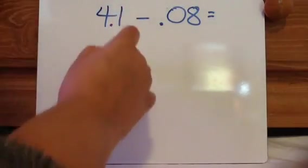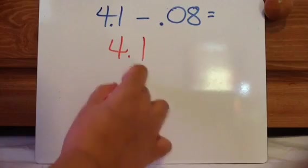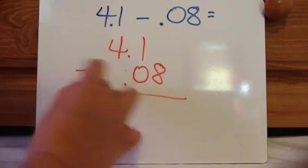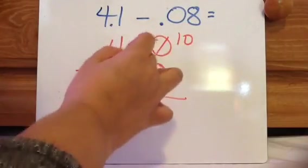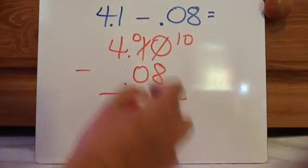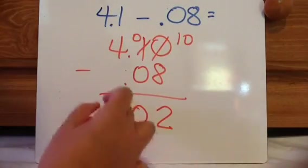Here's another one. 4 minus 1.08. Decimal over there. Put a 0 here. That becomes a 0. 10 minus 8 is 2. 0 minus 0 is 0. 4.